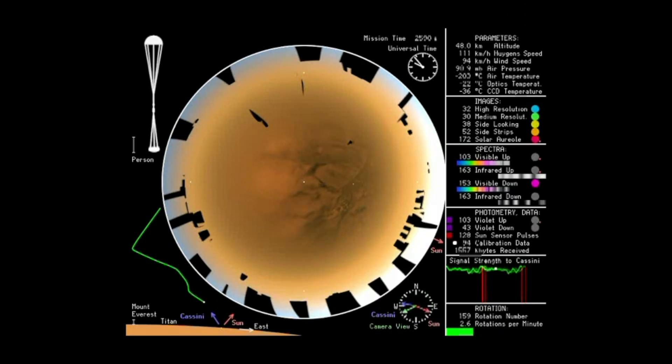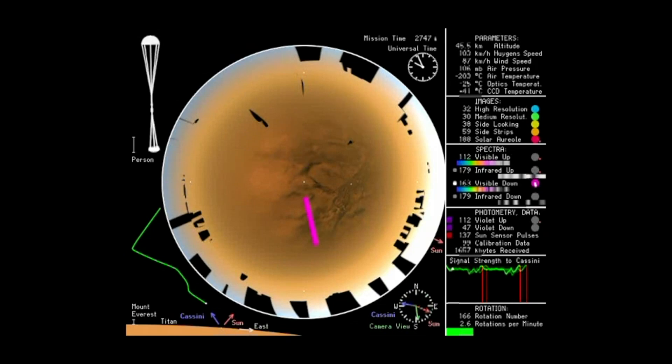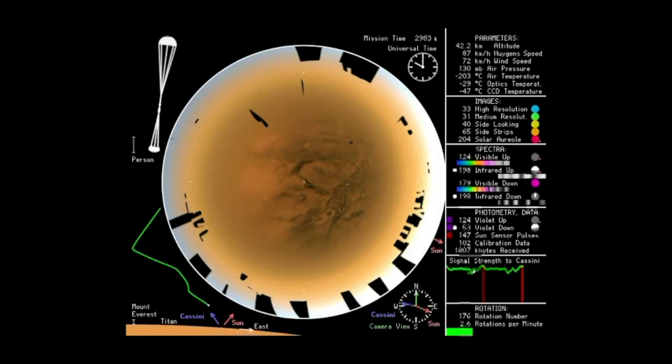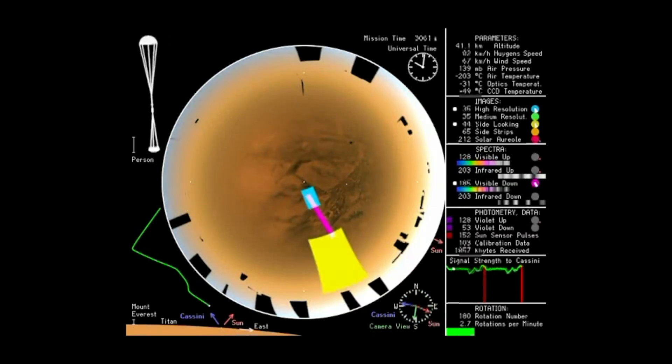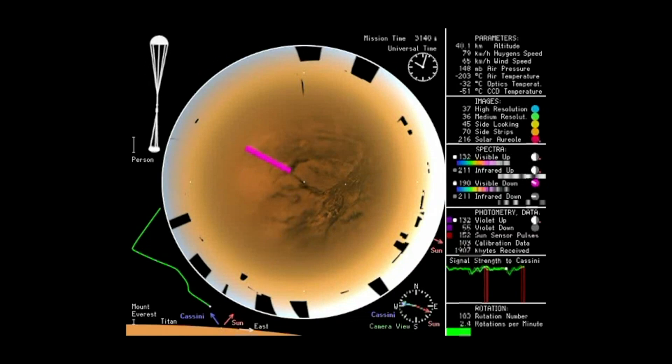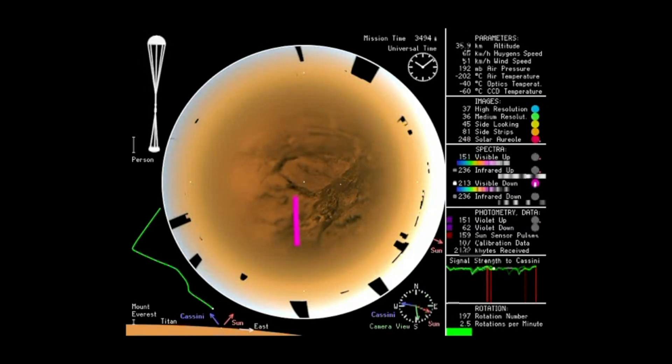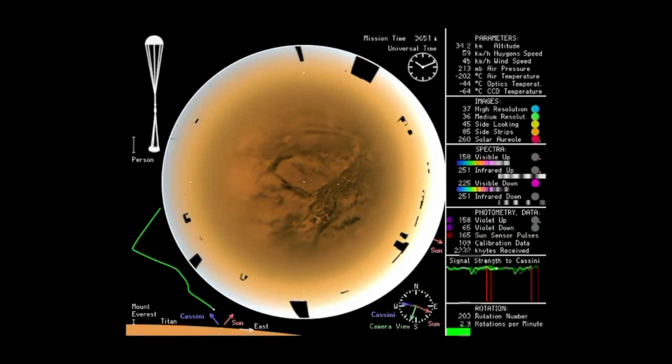We also carried a radar instrument on the orbiter that could probe through the clouds and the haze, and we were better at our filter selection on our cameras so we could see the surface of Titan. We found an amazing place, a world where methane plays the role that water plays here on Earth. It could be a gas or a liquid or even an ice, and so we saw methane flowing in rivers on Titan and filling north polar seas.